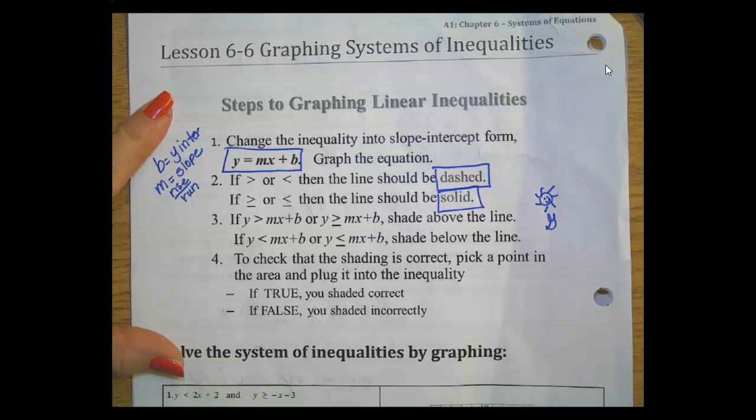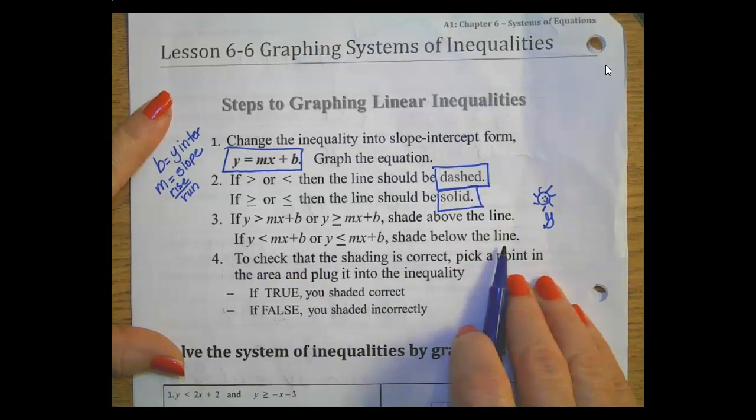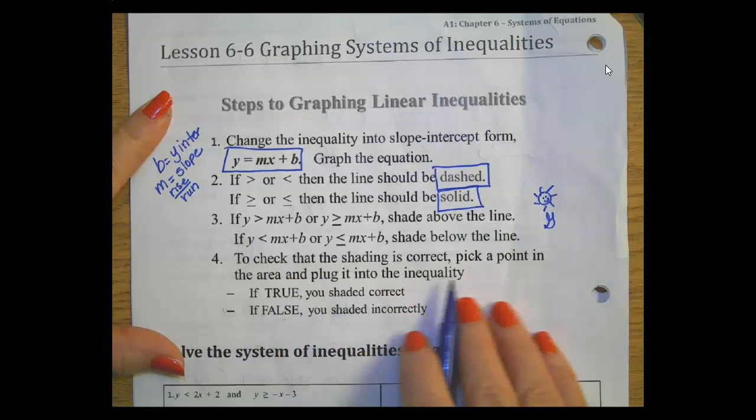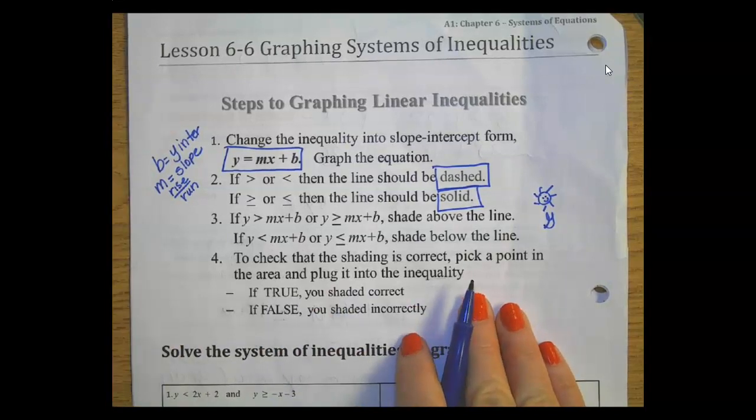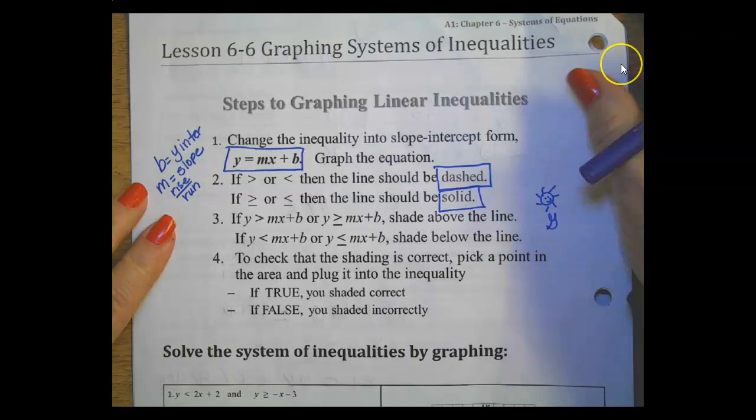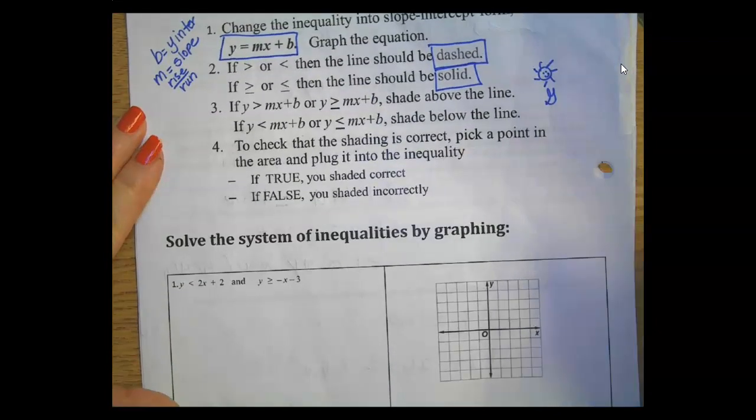If it's less than or less than or equal, you shade below the line. To check your shading, you can pick a point and plug it into both of your equations to see if it's true for each. Let's go ahead and start.